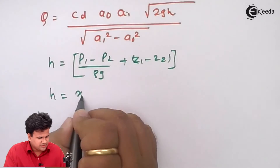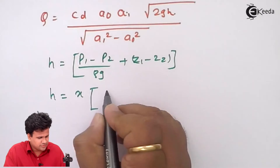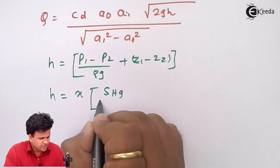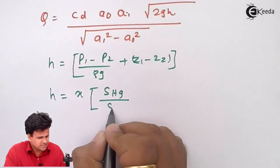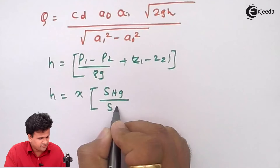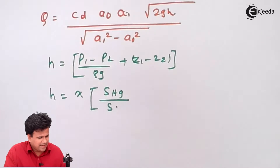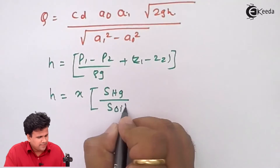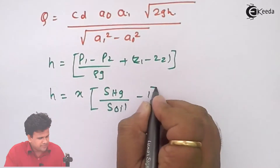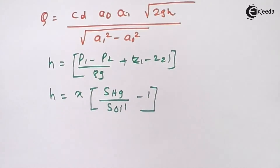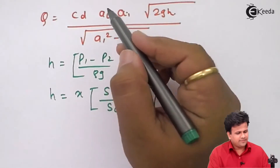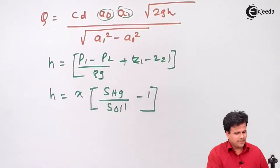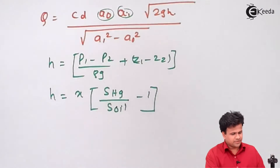H equals x into (specific gravity of mercury divided by specific gravity of fluid — in our case oil) minus 1. That is the value of H, and then we will calculate the values of A0 and A1.